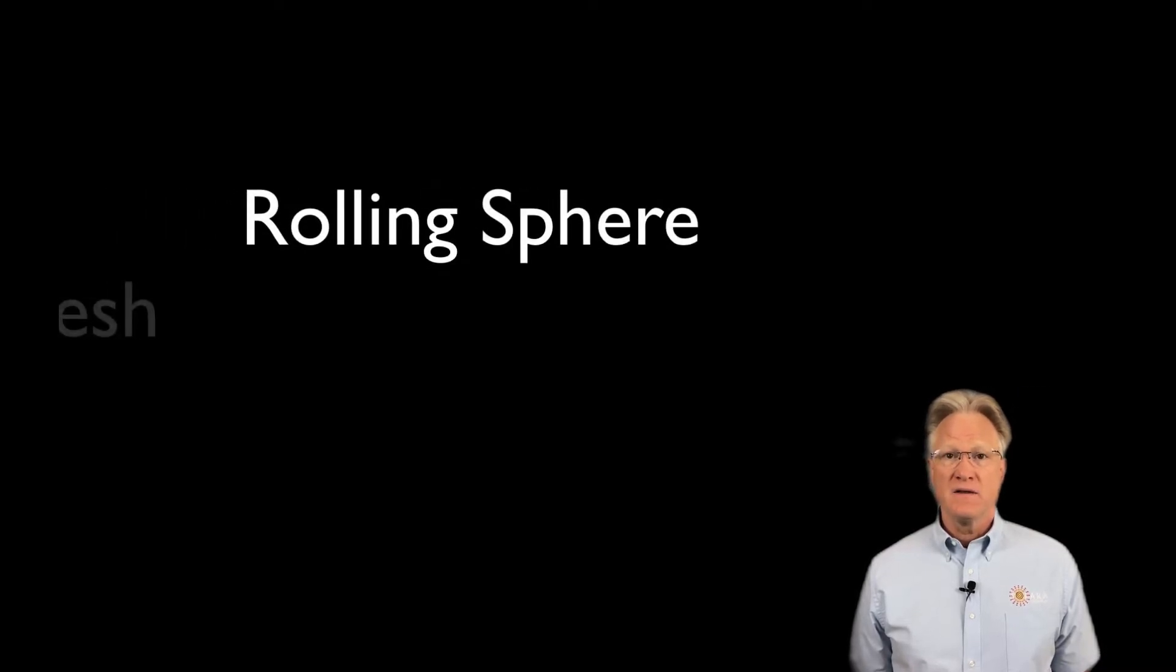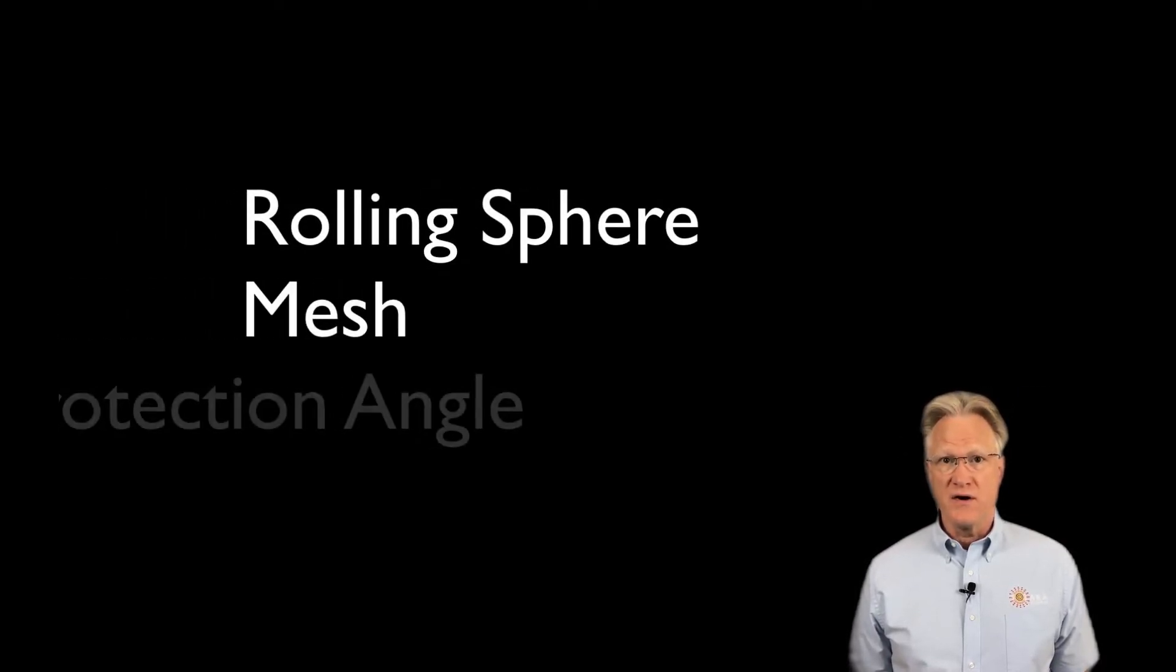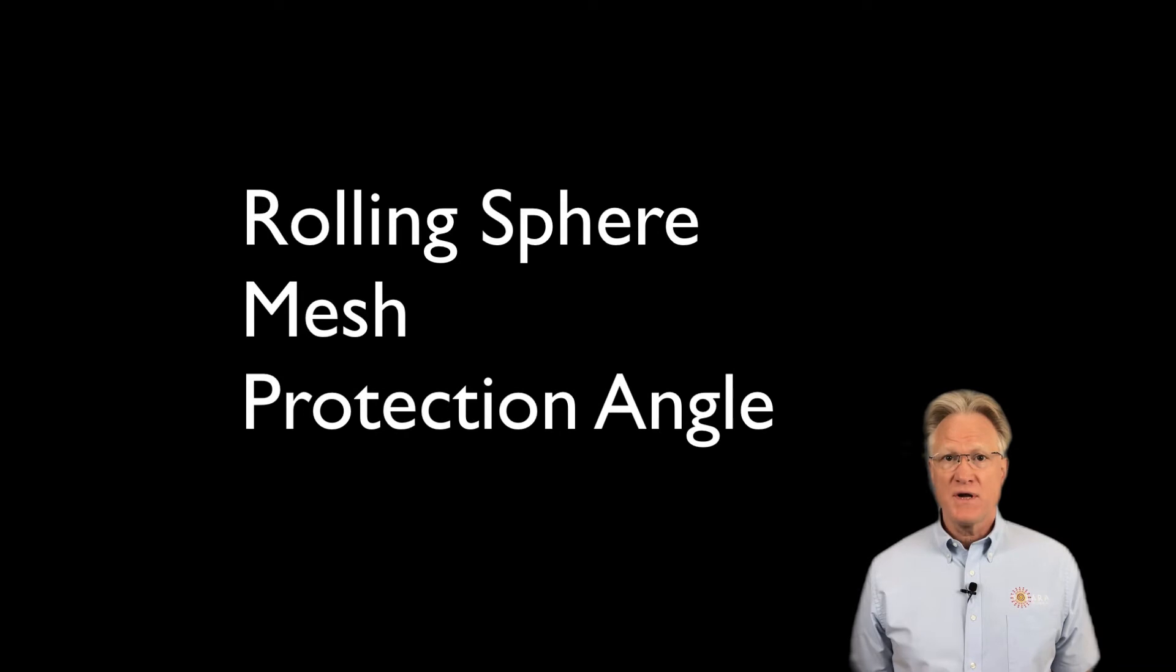Today I'll discuss how grounds are used to protect buildings from lightning strikes. There are three main methods used to design lightning protection systems: the rolling sphere, mesh, and protection angle methods. All get you to the same place with different equations.